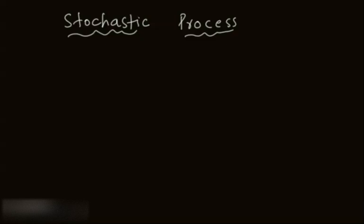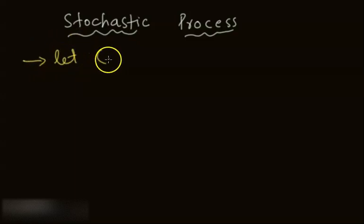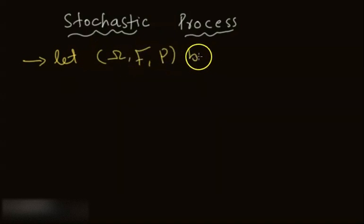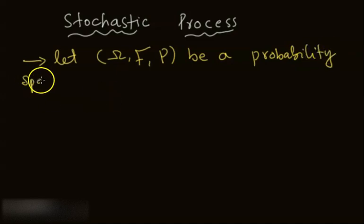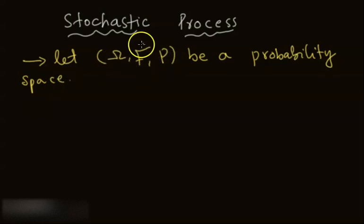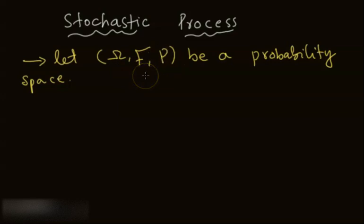So if we define it formally, let (Ω, F, P) be a probability space. So we have this triplet: Ω, the filtration F, and probability P, which we call a probability space.